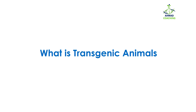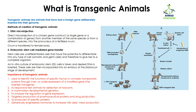Hello nerds, today we are going to study about what is transgenic animals. Transgenic animals are actually animals that have a foreign gene deliberately inserted into their genome. It means the foreign gene is not accidentally added or not naturally added, but you have by yourself added it into the genome of that particular animal because you wanted to add or study that gene, and as a result that animal becomes a transgenic animal.